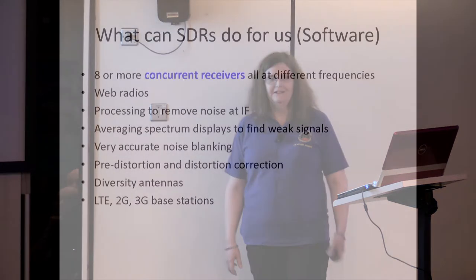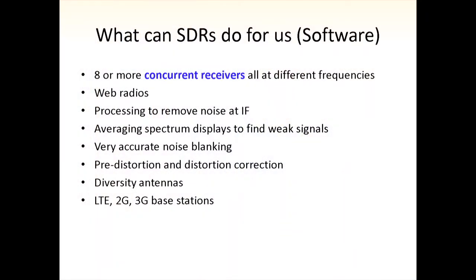What else can we do? Concurrent receivers — everyone's heard of the Web SDRs. You can have a lot of receivers all working on the same IF with 2.5 MHz of bandwidth. So if you're contesting and capable of writing the software, you can be demodulating everything going on on the band at the time. Because you're doing the ADCs at high frequency, you can do a lot more work at IF without bringing it all down to baseband. In fact, for most SDRs, baseband is up to 60 MHz of bandwidth, so there's a lot you can do there.